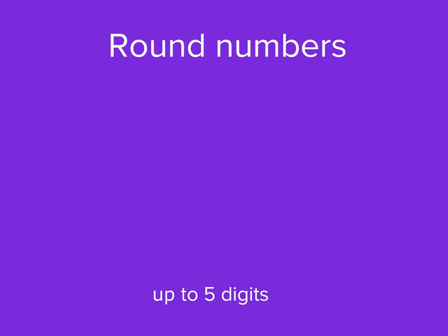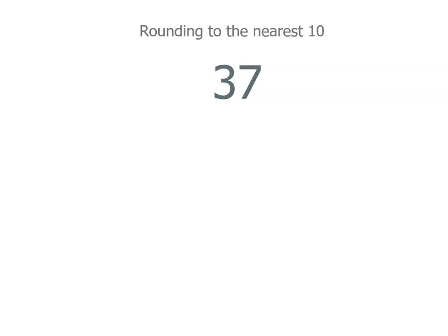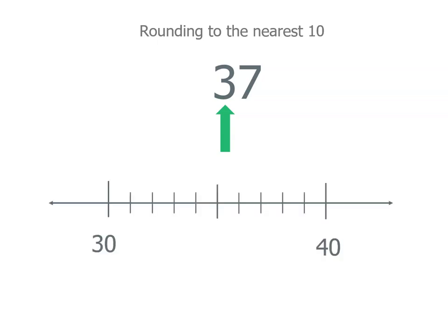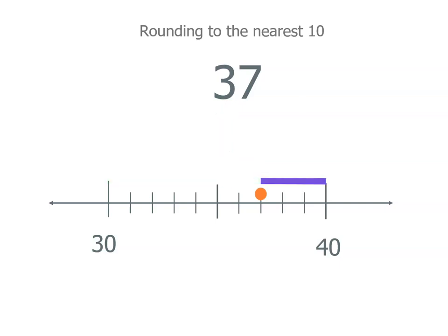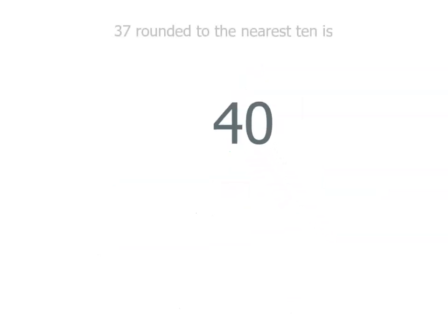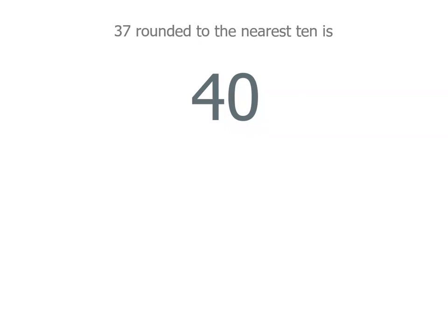Let's round some numbers now, starting with 37. If we want to round that to the nearest 10, we go to the tens place. Now it's a 3, so that means we're going to be rounding this to either 30 or 40. We want to know which one it's closest to. If we draw a line to 30 and then to 40, it's closer to 40. So 37 rounded to the nearest 10 is 40.